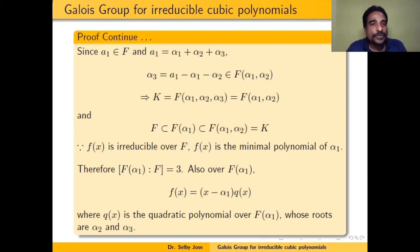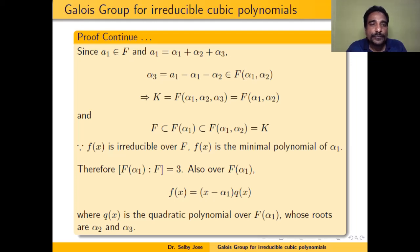Since K = F(α1, α2, α3) and α3 is in F(α1, α2), K reduces to F(α1, α2). We have a chain of subfields: F ⊂ F(α1) ⊂ K = F(α1, α2). Because f(x) is irreducible over F, f(x) is the minimal polynomial of α1. Therefore, the degree of extension [F(α1):F] equals 3, the degree of the minimal polynomial of α1.